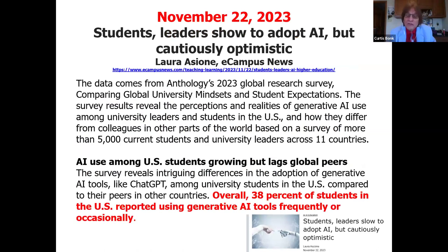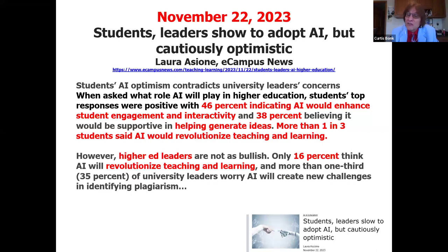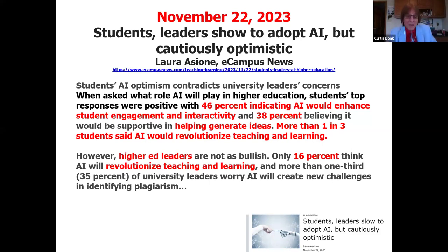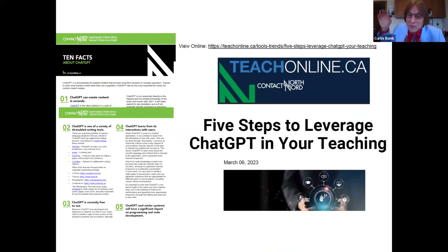In higher education settings, the reports vary, but at least half of instructors in one report said they're using it, and a third of those who aren't will consider it in the future. In one study from the United States compared to 11 other countries, 38% of students were using generative AI tools. 46% said it should and can enhance interactivity, 38% said it helps them generate ideas, and one in three think it's going to be a revolution. But in higher ed, only 16% think it's going to be a revolution — so there's some contrast in optimism.